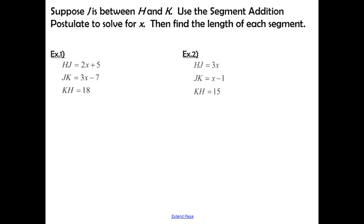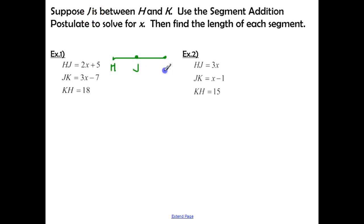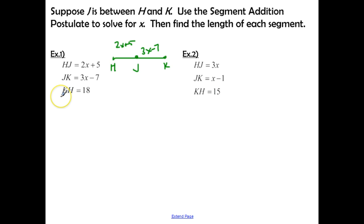Let's work out examples. Suppose J is between H and K. Use the segment addition postulate to solve for X, then find the length of each segment. Draw a diagram: J is between H and K. HJ is labeled 2X plus 5, JK is 3X minus 7, and the whole segment KH is 18.